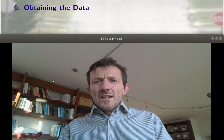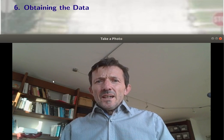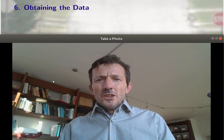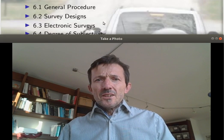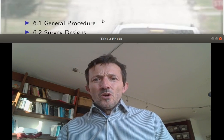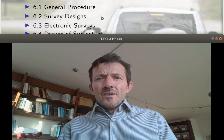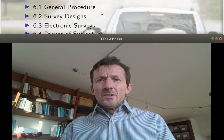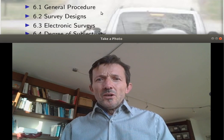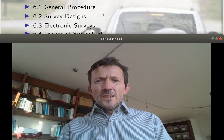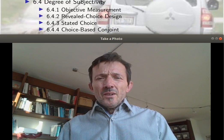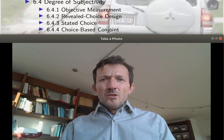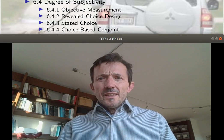Welcome to our sixth lecture on the Econometrics master's course methods. In this lecture, I will teach all the data-related issues, particularly how to obtain the data for a survey. I will first start with showing some flow diagrams of a general procedure, then what is the population and the statistical subject. Also electronic surveys, and finally some examples of how to do surveys depending on the degree of subjectivity.